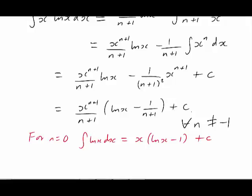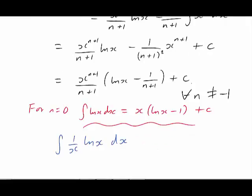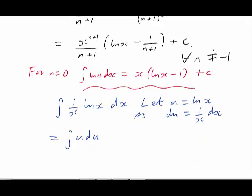We're nearly done. Let's just deal with that exceptional case, n equals negative 1. It's done a different way. When n is negative 1, the integral we want to evaluate becomes the integral of 1 over x log x. We can't do it by parts, but we can do it by substitution, because look, 1 over x is exactly the derivative of log x. So let's make a substitution u equals log x. So in that case, du is 1 over x dx. And so our integral is just the integral of u du. And that's very simple. A half u squared plus c. Then we substitute u equals log x, and we get a half log x squared plus c.